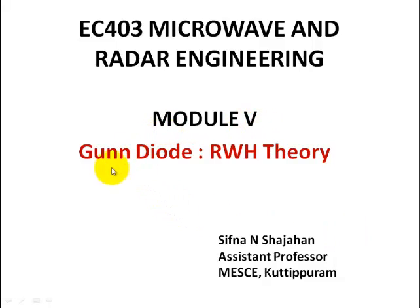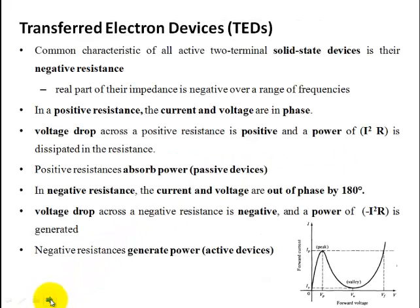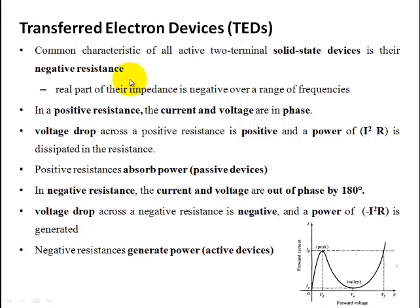Module 5: Gunn Diode and RWH Theory. Before going into that topic, we will discuss what are transferred electron devices. Most solid state devices exhibit a property termed as negative resistance — that means for a range of frequencies, the real part of the impedance will be negative.